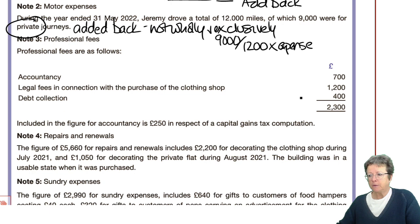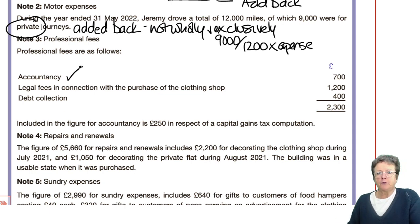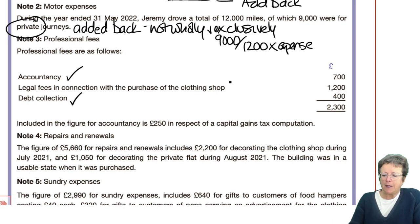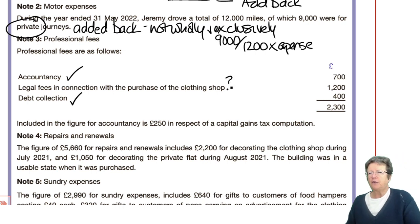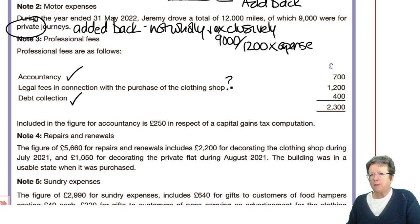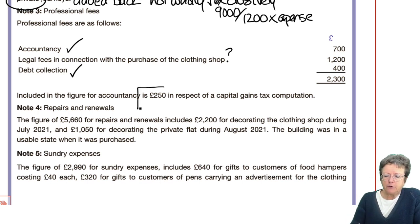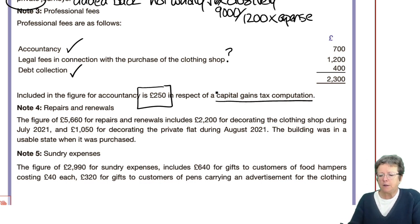Professional fees: accountancy is a normal trade expenditure — that's okay. Debt collection is also an expenditure — I'll let you decide whether that needs to be added back. Is it capital or not? Included in the professional fees there's £250 linked to capital gains — that is not a business expense. Every item in a question like this — this is why you can see it's a 15-marker — every item you need to think about.